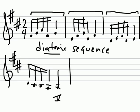Because in a diatonic sequence, we follow the notes of the D major scale. We don't adjust to make the half steps and whole steps match exactly from segment to segment — we let the D major scale dictate where the half steps and whole steps are. This is as opposed to a real sequence, which would have sounded like this. If that sounds a little odd, it's because it doesn't sound like it's really staying in D major. Diatonic sequences are the most common ones we'll be seeing and the ones we'll study in this chapter.